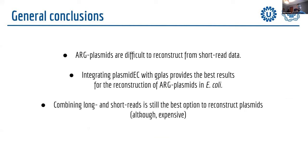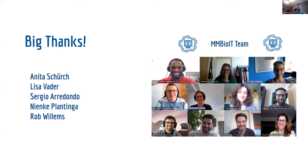In general conclusions: ARG plasmids are difficult to reconstruct from short-read data. Integrating the PlasmidEC ensemble classifier with GPlas provides the best results for reconstructing ARG plasmids in E. coli. Combining long and short reads remains the best option overall but is expensive, so if you only have short reads and work with E. coli, I would definitely recommend PlasmidEC combined with GPlas. I'd like to thank my supervisors, Ninka Planting and Rob Willems, as well as Elisa Vader, Sergio Arredondo, and the entire bioinformatics department.